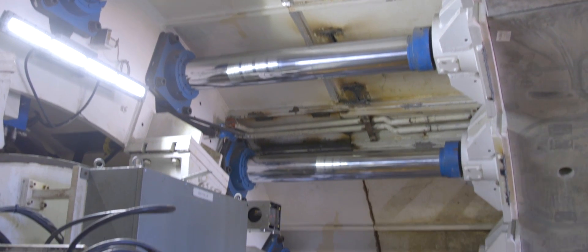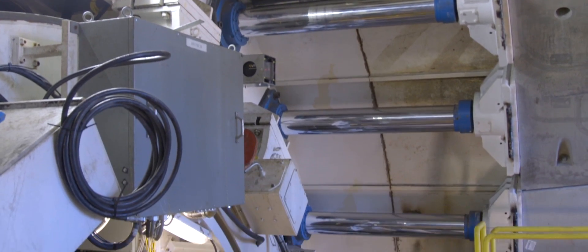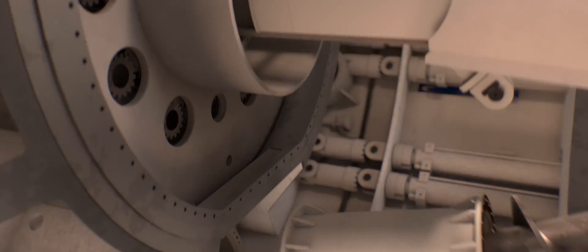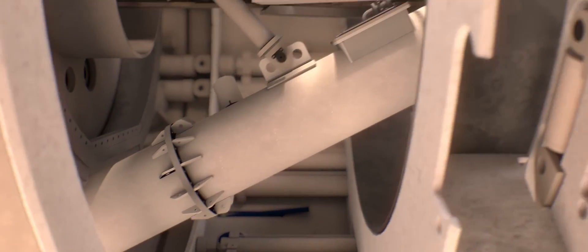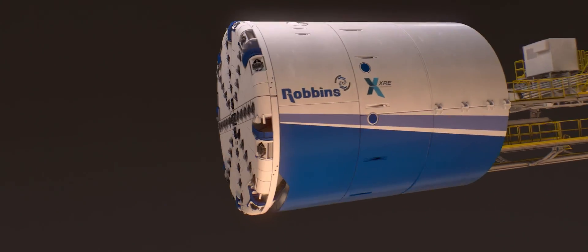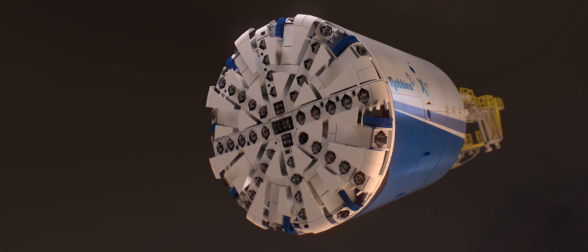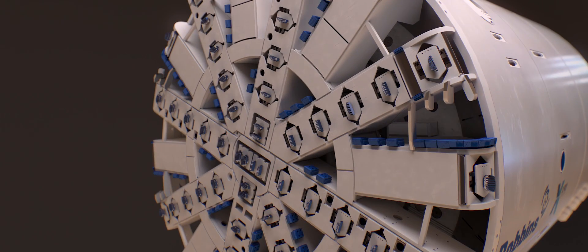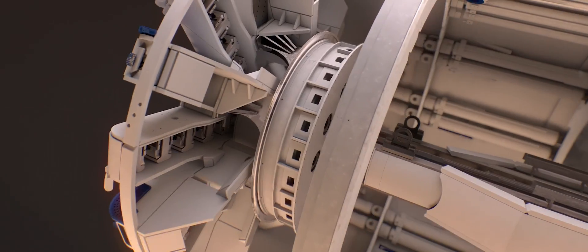To convert the TBM, the belt conveyor is removed and replaced with a screw conveyor. Plates in the cutter head are removed to increase the opening ratio. Cutting tools can be changed from disc cutters to mixed ground cutting tools if needed. Once in EPB mode, the machine operates like an earth pressure balance machine.